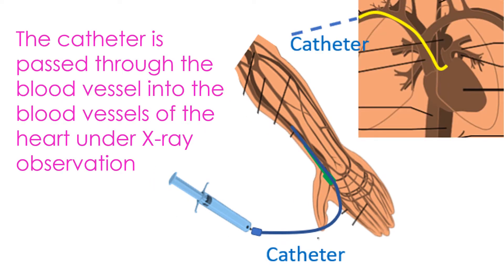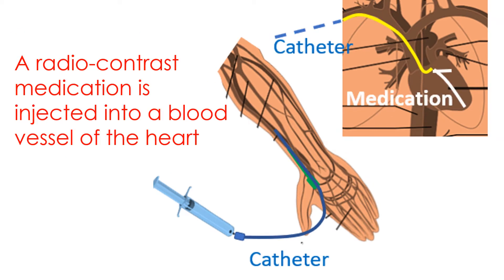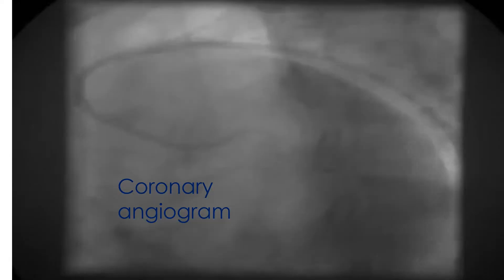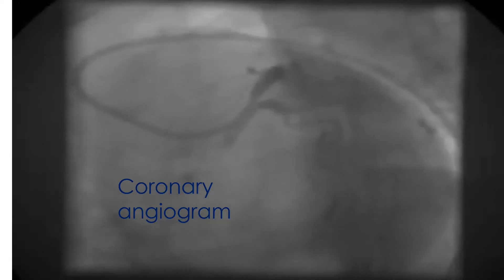The catheter is passed through the blood vessel into the blood vessels of the heart under X-ray observation. A radiocontrast medication is injected into a blood vessel of the heart. X-ray imaging equipment. Coronary angiogram.